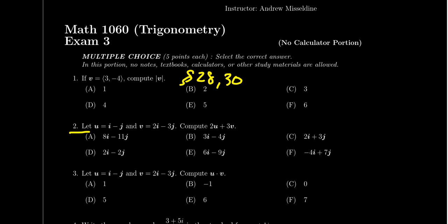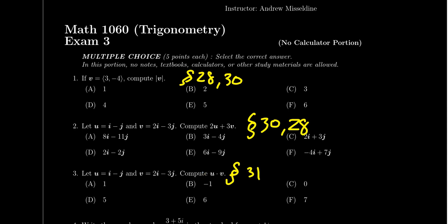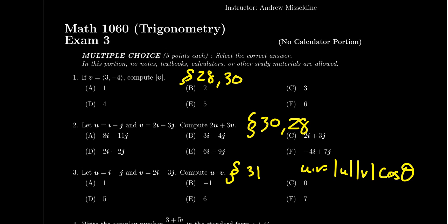Question two will be similar — perform a calculation like adding or scaling vectors. This is easier in algebraic form, but can you also add and scale vectors given geometrically? Question three is also a vector question asking you to compute the dot product of two vectors. You can use the algebraic form, or use the formula: the dot product U·V equals the magnitude of U times the magnitude of V times the cosine of the angle between them.